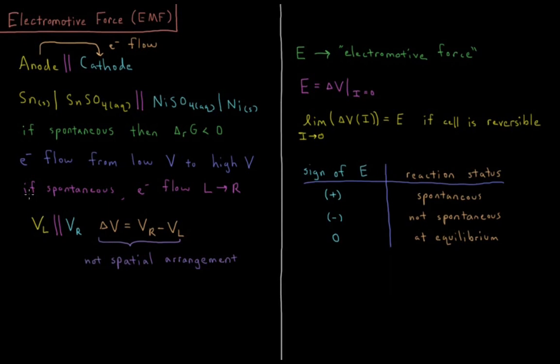If we have a spontaneous reaction, then the electrons are going to flow from the left to the right on our diagram, and that's going to complete the reaction in the forward direction as we have drawn it.